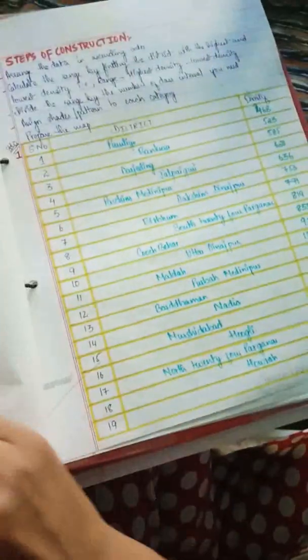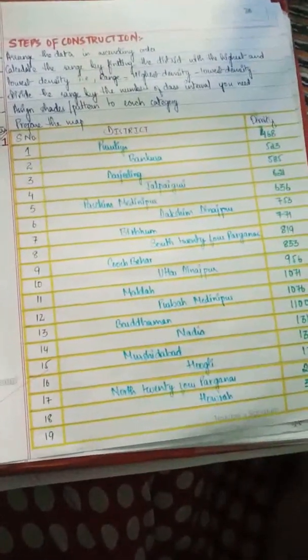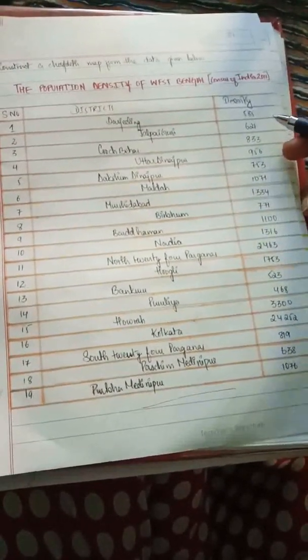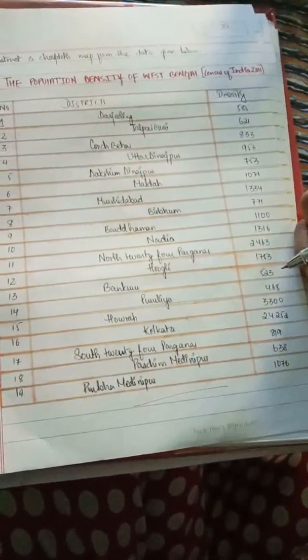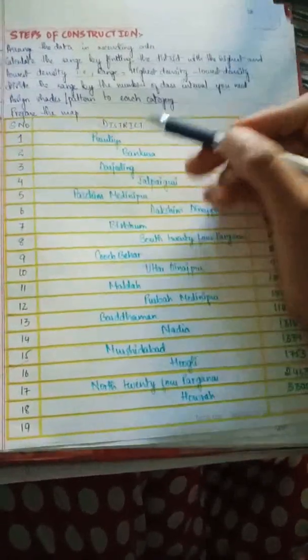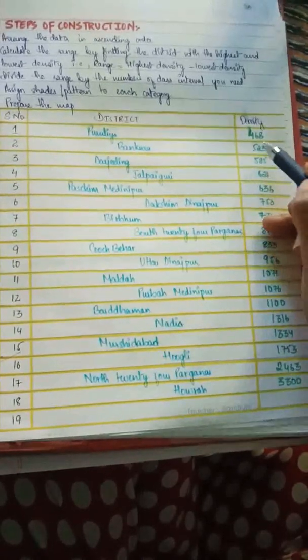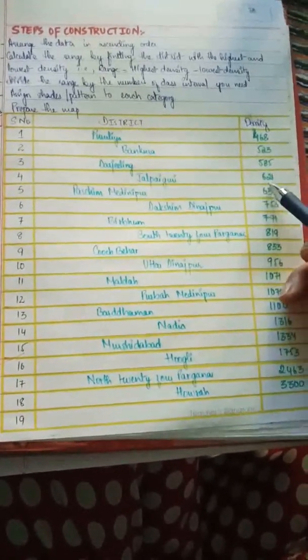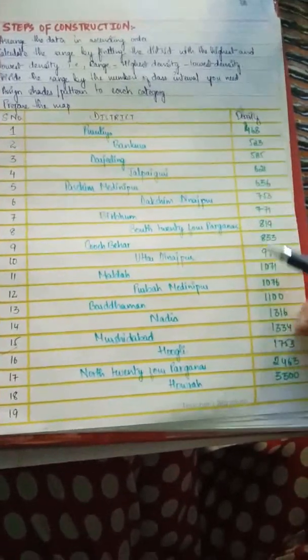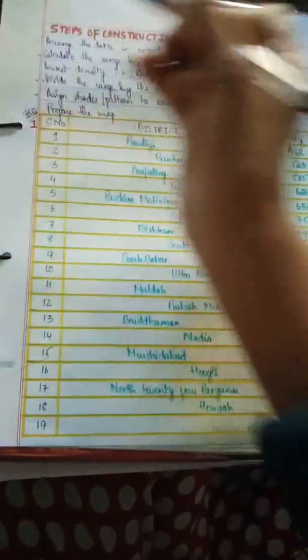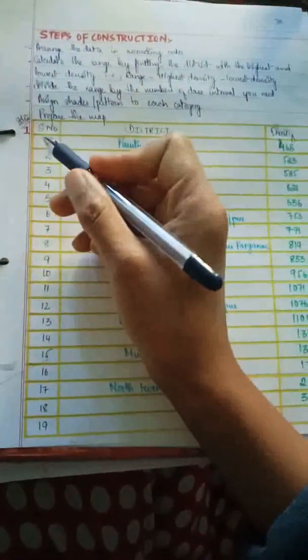The first step to construct a choropleth map is to arrange the data in ascending order. The data given is in random order, not ascending or descending, so we will arrange it from lowest density to highest density. After arranging, Purulia has the lowest density of 468, then ascending: 523, 585, 621, 636, 753, and the highest is Haura at 3300.